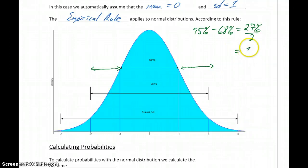If we divide that by 2, we get 13.5%. So this region, from one standard deviation above to two standard deviations above, is 13.5% of our data. And from one standard deviation below to two standard deviations below, we get 13.5% of our data as well.